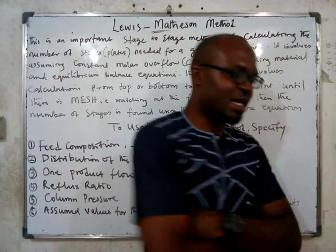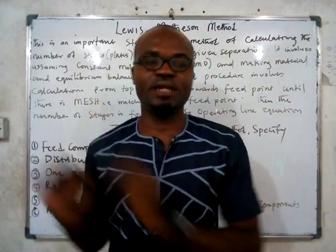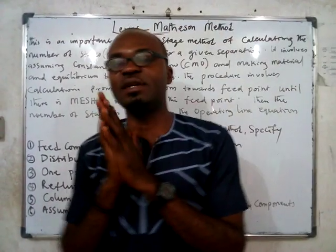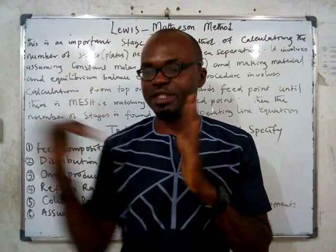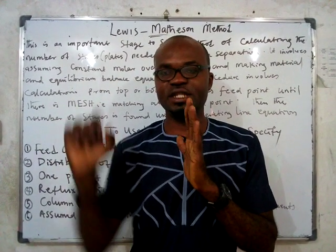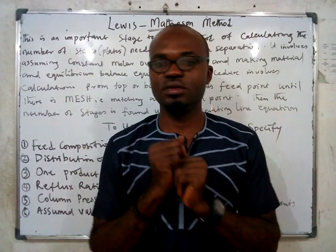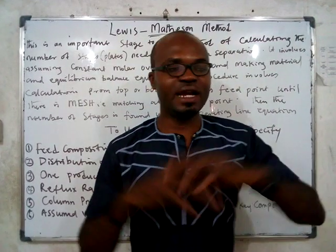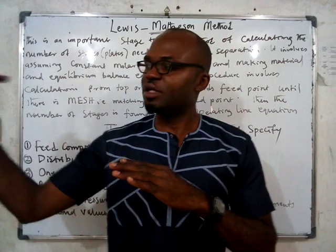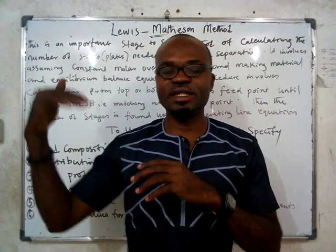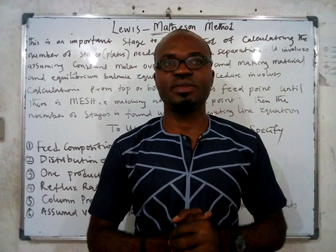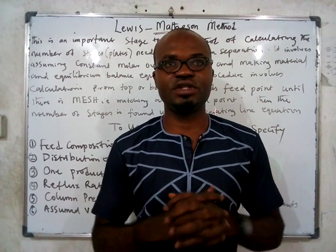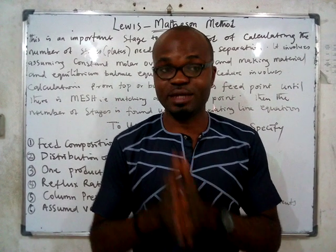In the previous class, I distinguished between a binary system and a multi-component system. A binary system is a distillation column that receives a feed composed of just two components, separated into distillate and bottoms. A multi-component system receives a feed that contains several components, like crude oil. In real-life situations, what you actually see is a multi-component system.